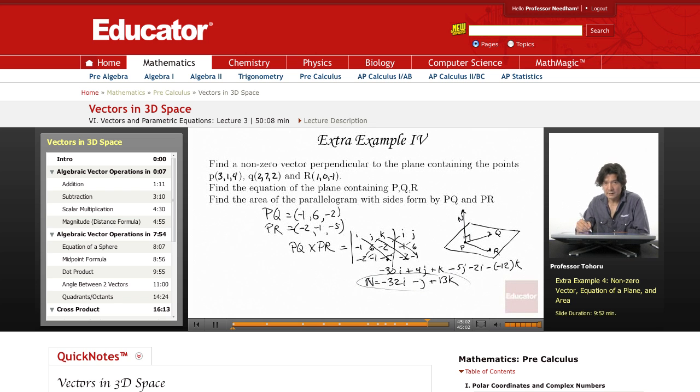This represents the vector that is normal to these two vectors on the plane. In fact, it becomes normal to the whole plane. So we've answered the first part of this question. Now to find the equation of the plane, we know how to do that. This is simply negative 32x minus y plus 13z equals some value d. So we want to plug in one of these values.